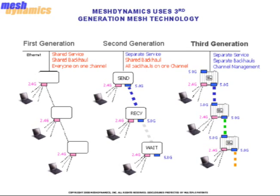Second generation mesh nodes are a slight improvement from first generation mesh nodes in the sense that an additional radio is incorporated on the node to handle backhaul functionality. This is typically a 5 GHz radio. Although this allows the node-to-node backhaul traffic to flow separate from the client-to-node traffic, which is typically 2.4 GHz, all backhaul radios are still on the same channel.